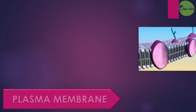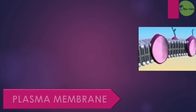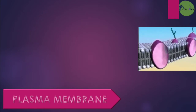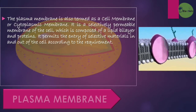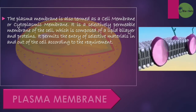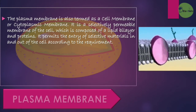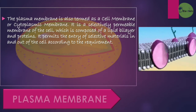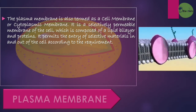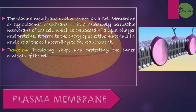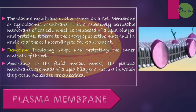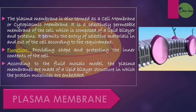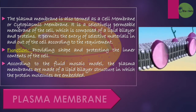Before learning about cell organelles, we need to learn about two important parts of the cell: the plasma membrane and the cytosol. The plasma membrane, also termed the cell membrane or cytoplasmic membrane, is a selectively permeable membrane that permits the entry of selective materials in and out of the cell according to requirement. It is composed of a lipid bilayer and proteins. Its main function is providing shape and protecting the inner contents of the cell. According to the fluid mosaic model, protein molecules are embedded in the lipid bilayer structure.